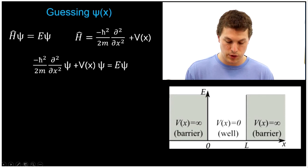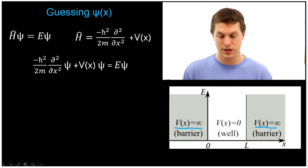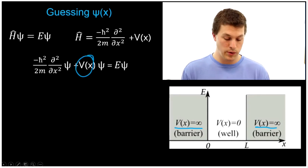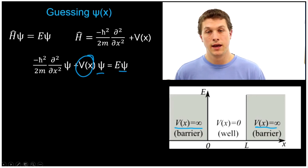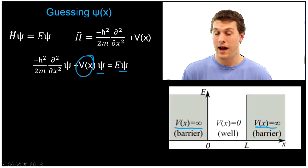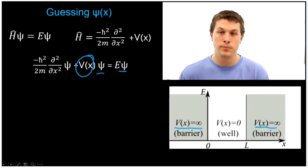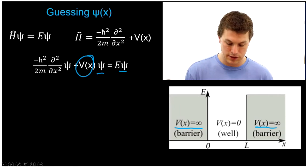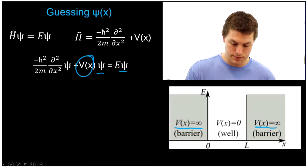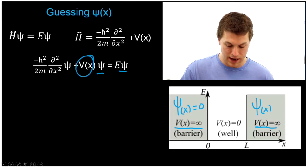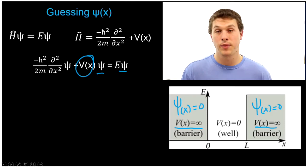Let's first start with the regions where the potential is infinite. If this number is infinitely large, the only way this is going to have a solution is if our wave function is zero. If the potential is infinitely high, we can't have an electron there — it's like putting yourself at the bottom of an infinitely tall mountain and saying 'get up there.' So the wave function outside our well is zero.